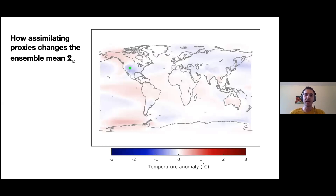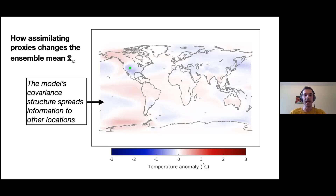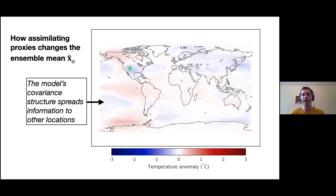When I assimilate one proxy over North America, it makes the area around it colder but makes the Central Pacific a little bit warmer. When we do the reconstruction, it impacts not only right where you have the proxy but also over a very large area — and that area depends on the covariance structure of the model. We know that if you know information in one location, it can tell you about many other locations. In data assimilation, you rely on the model's covariance structure to spread that information to other locations.